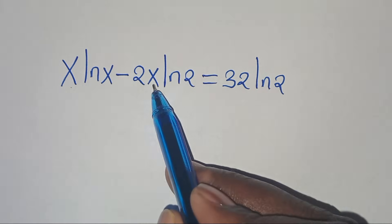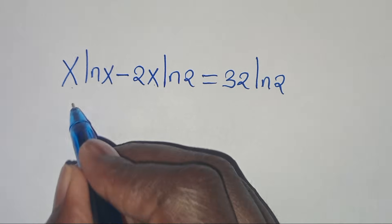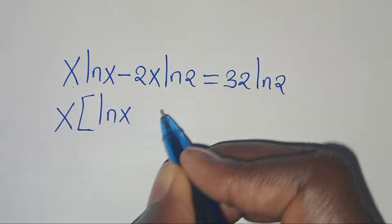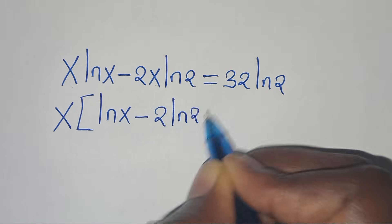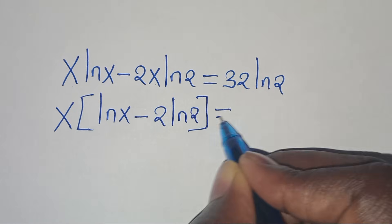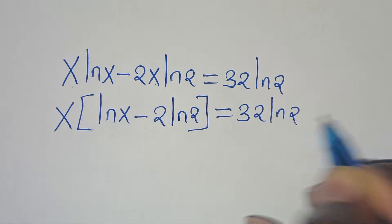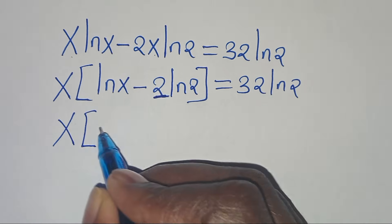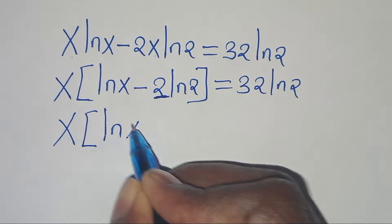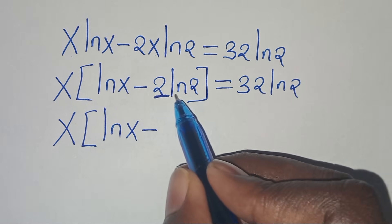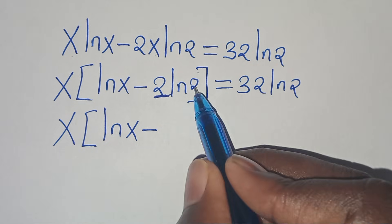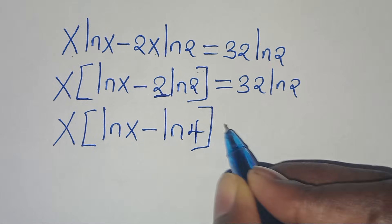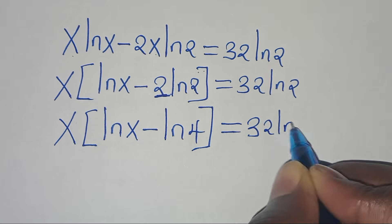Since x is common here, we can factor out x, so that we have x into the parenthesis of ln of x minus 2 ln of 2, and this is equal to 32 ln of 2. Since 2 ln of 2 equals ln of 2 to the power of 2, and 2 to the power of 2 is 4, we have ln of 4. So x times the parenthesis of ln of x minus ln of 4 equals 32 ln of 2.